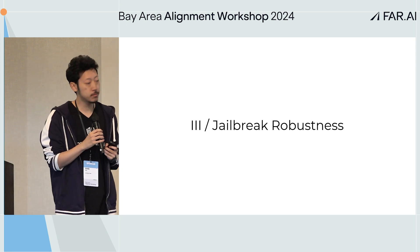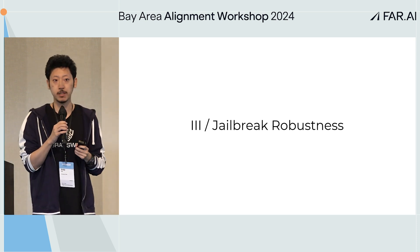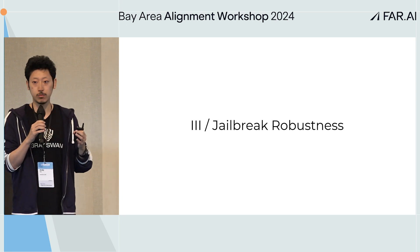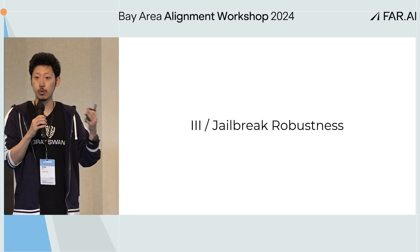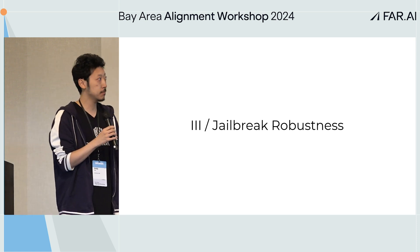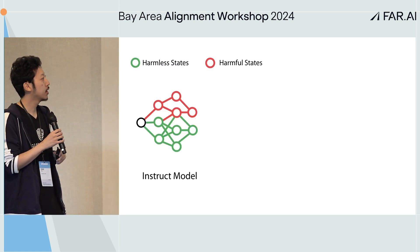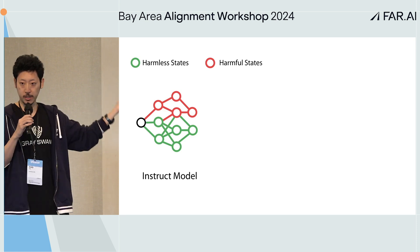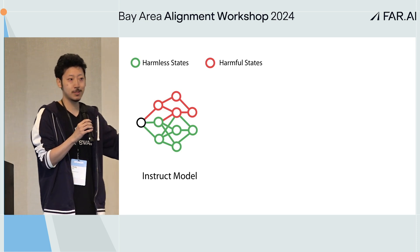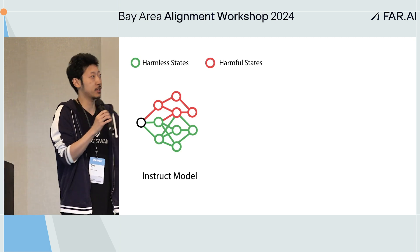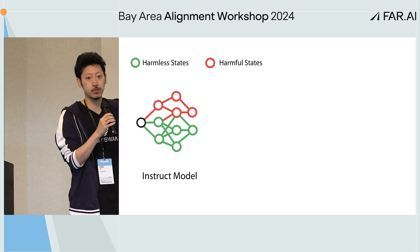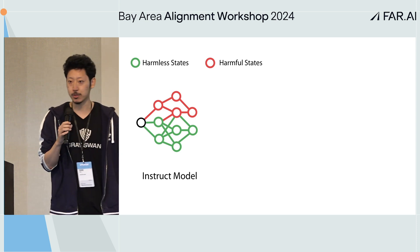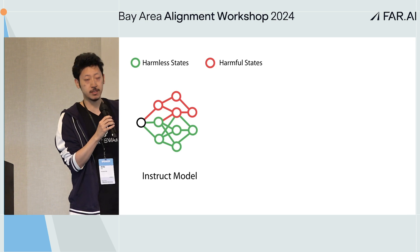Next is another example of how top-down interpretability can increase AI safety — this time on adversarial robustness and reliability. Instruction-tuned models can answer questions, but sometimes those questions are harmful, so they need to traverse harmful states. For example, 'how do you build a bomb?' — 'here's how, step one, step two' — that's traversing the red states. People don't like that, so refusal training is applied: RLHF, DPO, and adversarial training.